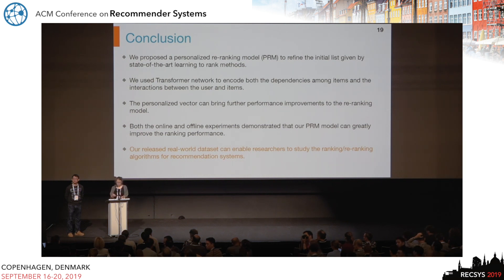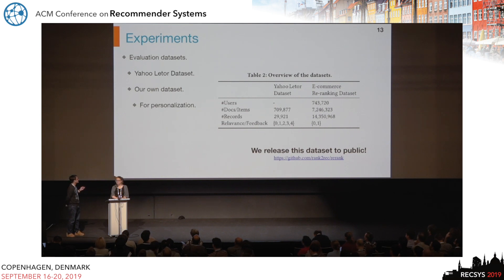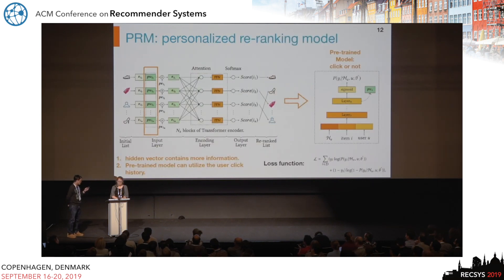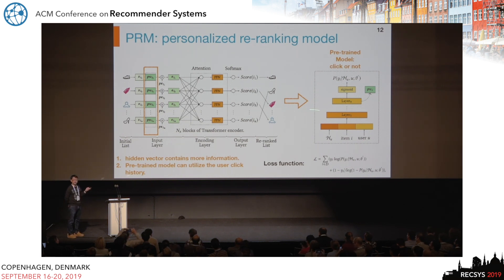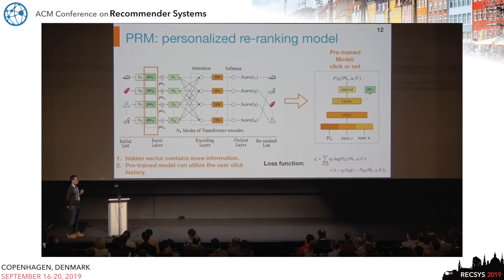An audience member asks about how the user preference vector is kept up-to-date, and whether this is a production system. The presenter explains that this is indeed a production system. The personalized vector is extracted from the hidden layer of a pre-trained click-through rate model, which captures long-term user preferences. However, it can also be learned jointly with the re-ranking model, or manually designed features can be used — both approaches are viable.